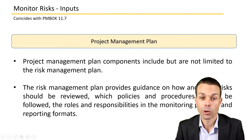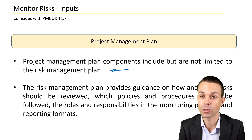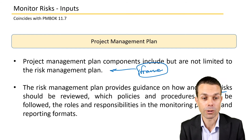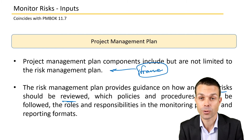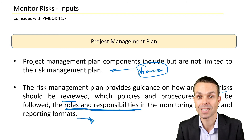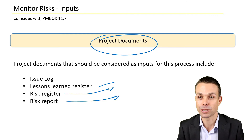The project management plan is a key input, so we're going to need the risk management plan because that was our process of how we're gathering, managing, and monitoring our risks. It's the framework that we agreed upon at the beginning, and so this is what we're using now as a guide for monitoring risks. This provides guidance on when risks should be reviewed, which policies and procedures should be followed, the roles and responsibilities of the people in the monitoring process, and any reporting formats — so how are we reporting on these risks to our stakeholders? Other key inputs will be our project documents, including lessons learned from other projects, our risk register which is our list of identified risks, and any previous risk reports shown to stakeholders.